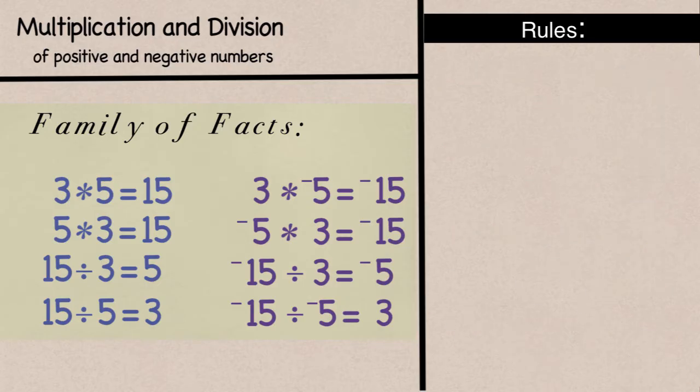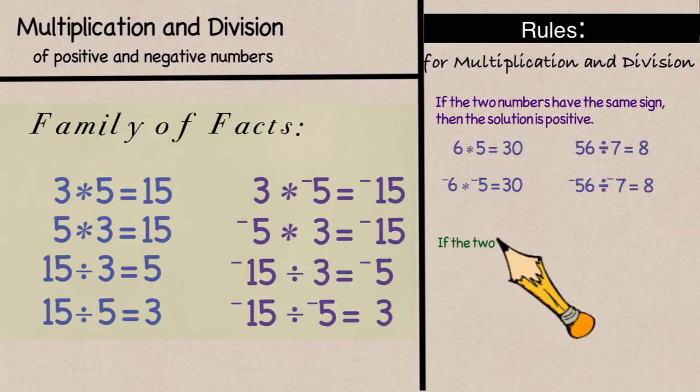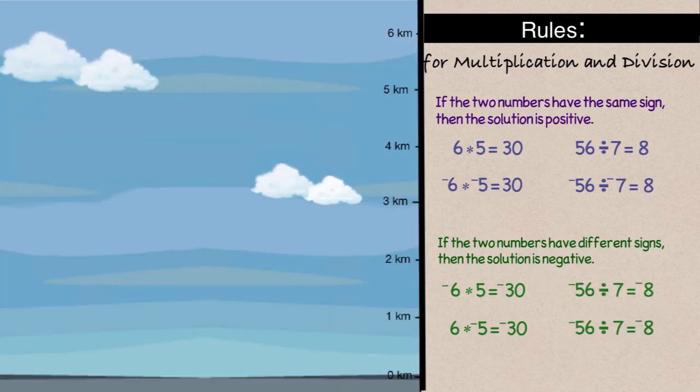In fact, the rules for both multiplication and division of positive and negative numbers are the same. If two numbers have the same sign, then the solution is positive. And if two numbers have different signs, then the solution is negative. Let's try a couple of examples.